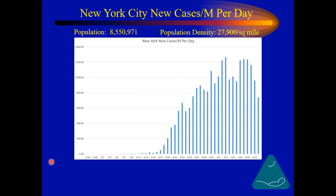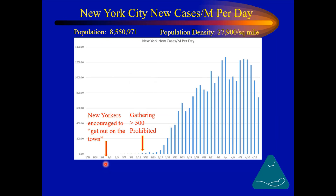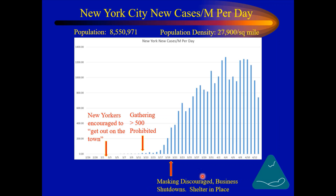Now let's look at the government response. On about March 2nd, the government encouraged people to get out on the town — don't worry about COVID-19, it's not an issue. Then, as some cases began to trickle in, the government recommended that gatherings greater than 500 should be prohibited. And then, as things began taking off, government officials said that masking should be discouraged — don't wear masks, masks are bad. But at the same time, they said that businesses need to shut down and people need to shelter in place.